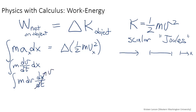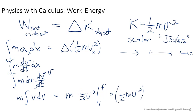And now we're going to call this v, so this becomes m times the integral of vdv. Well, I know what that is. That's m times one-half v squared from initial to final, so that's one-half mv squared final minus one-half mv squared initial, which is just what we had here.